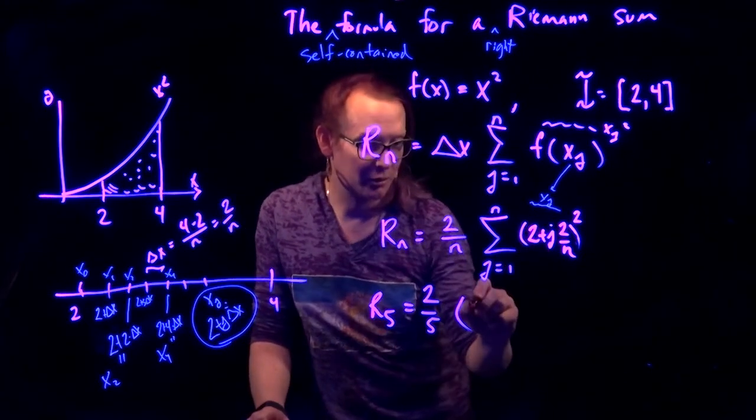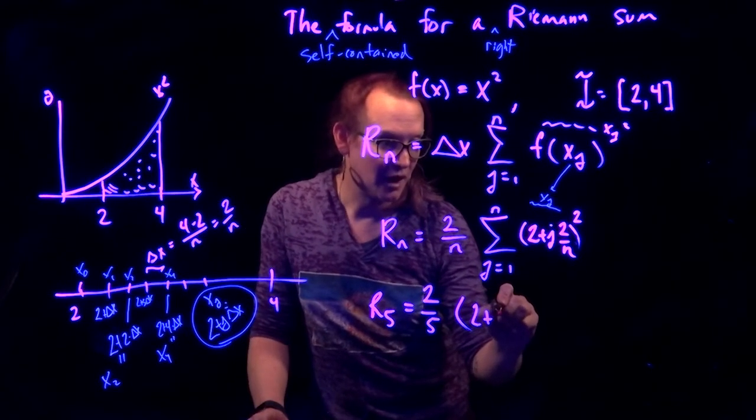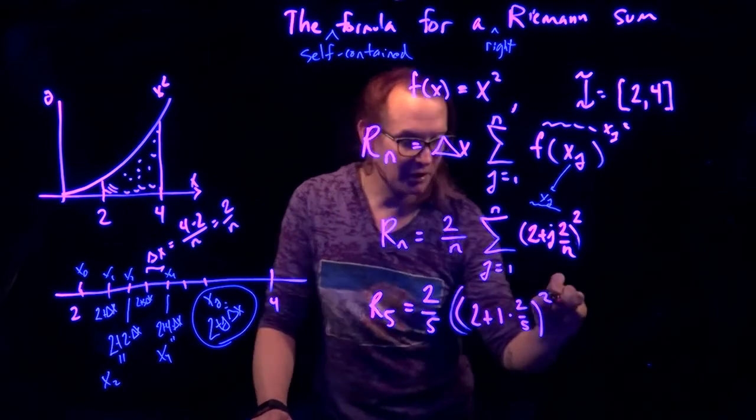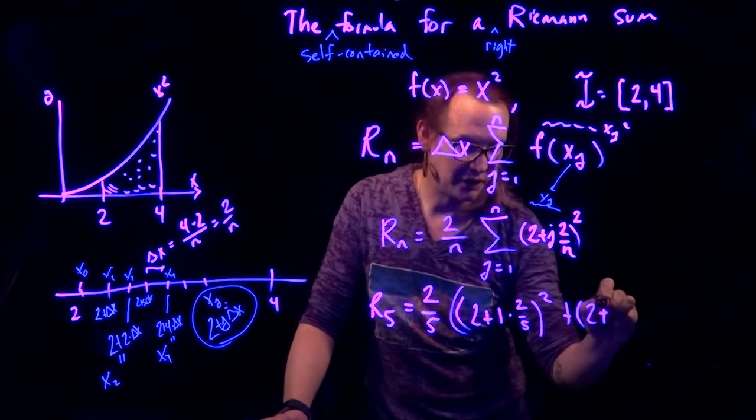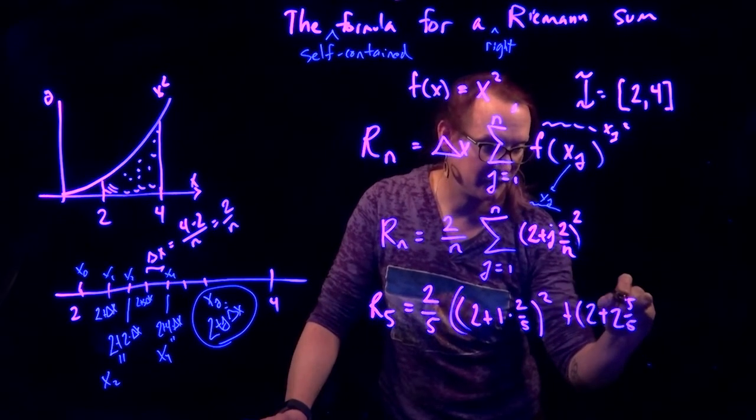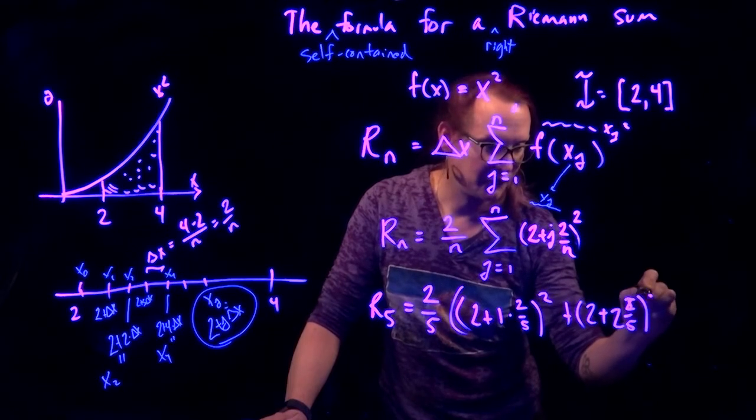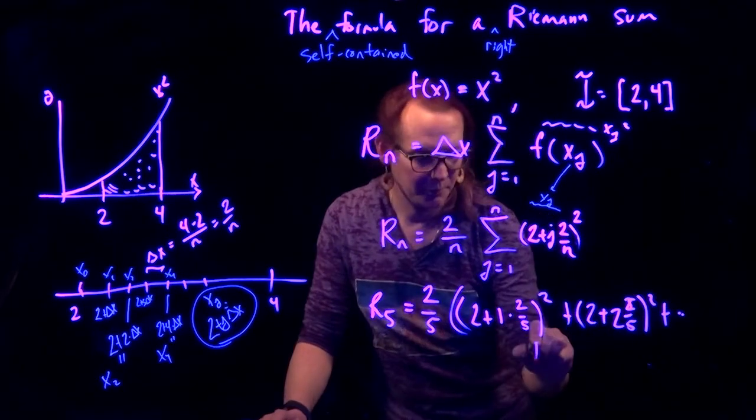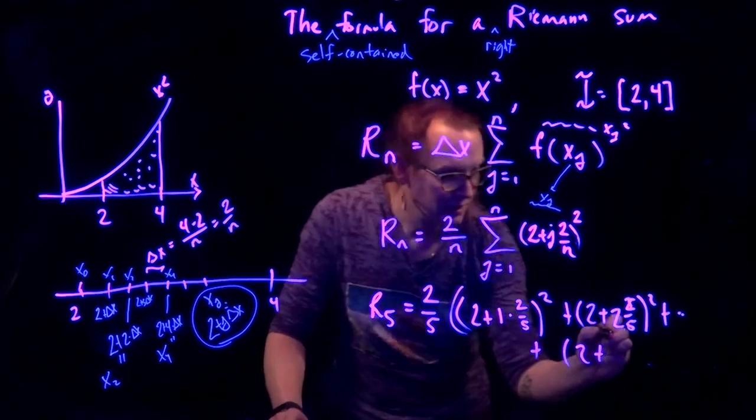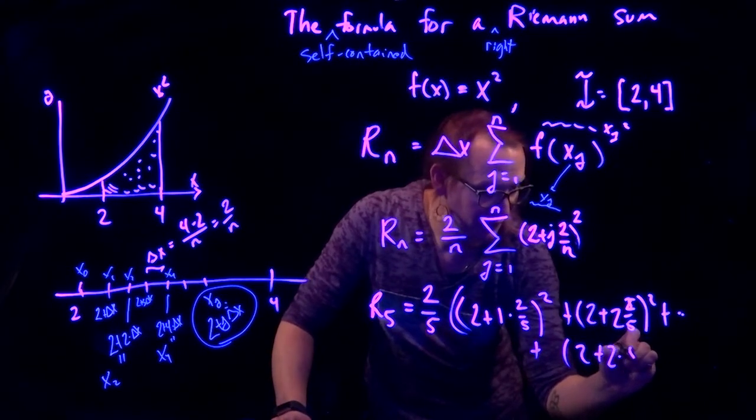I'm going to go 2 plus 1 times 2 over 5 squared plus 2 plus 2 times 2 over 5. That's a 2 over 5 squared plus plus 2 plus going all the way to n.